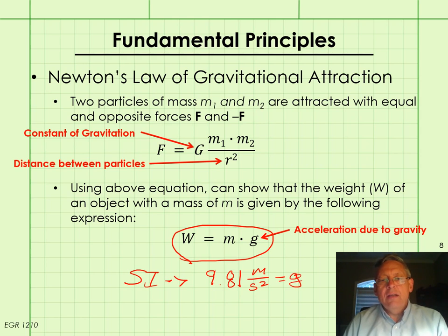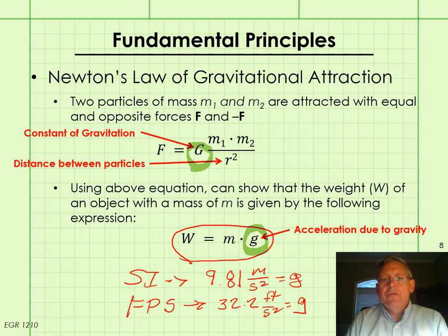Note that the acceleration due to gravity changes depending on where you are on the earth and what your elevation is. But for our purposes, in SI, we're going to use a value of 9.81 meters per second squared for g. And in FPS, foot-pound-second, we're going to use a value of 32.2 feet per second squared for g. Also note that this little g is not the same as this big G. Two different things.